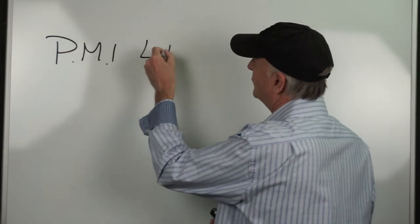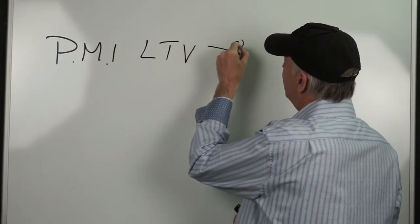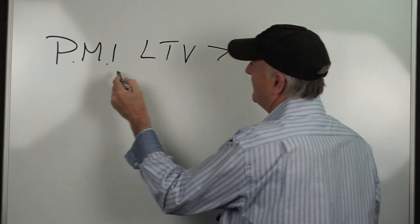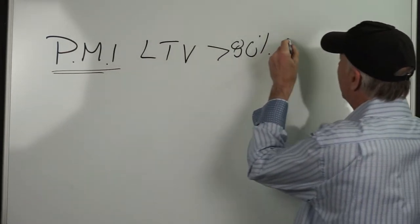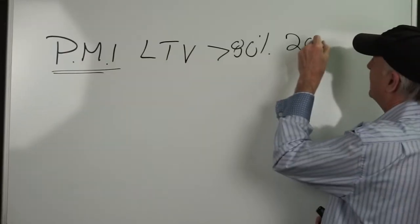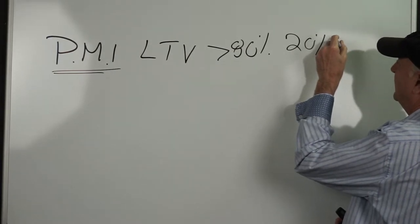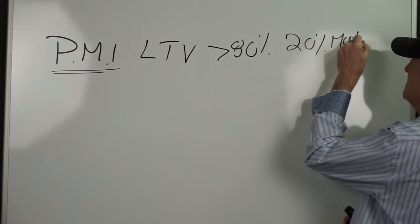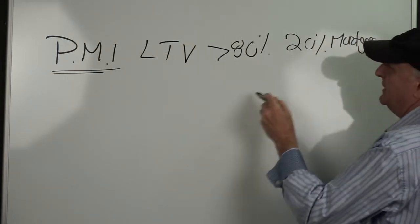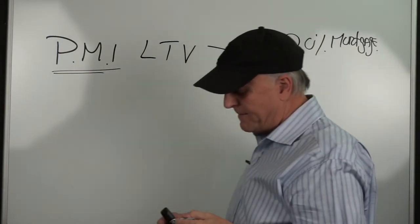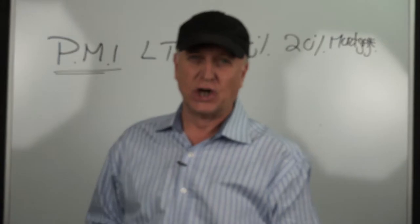So the loan-to-value would be over 80% and that's where PMI is going to be required. In other words, if you put down less than 20% on your mortgage, the banks are going to require you to carry PMI — private mortgage insurance.